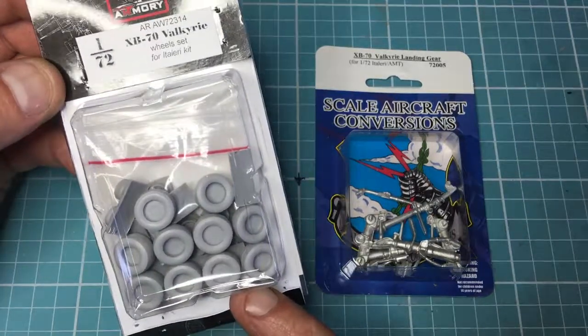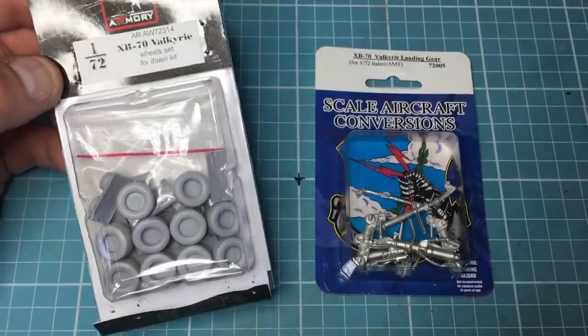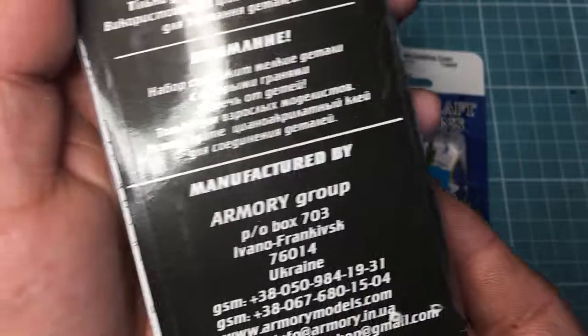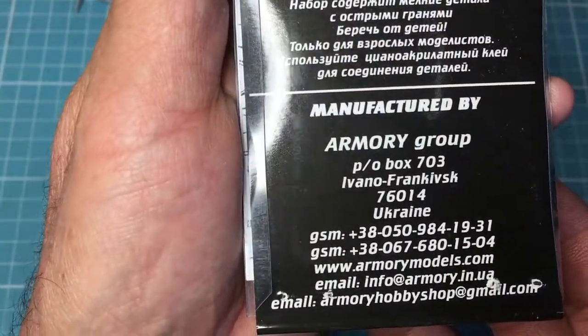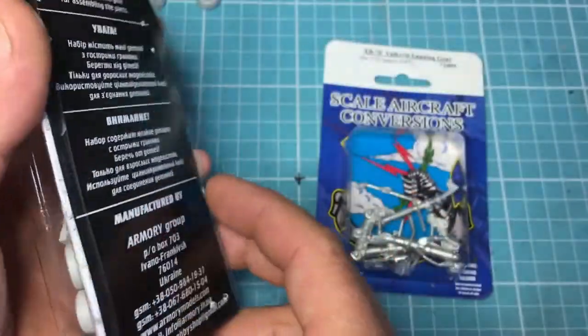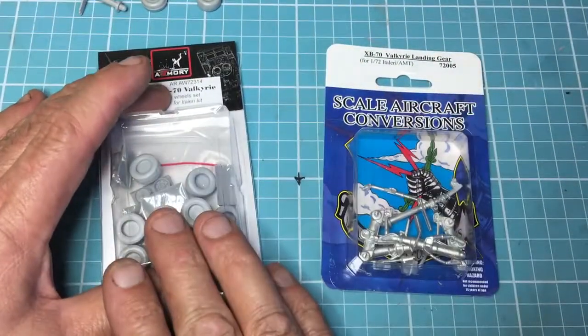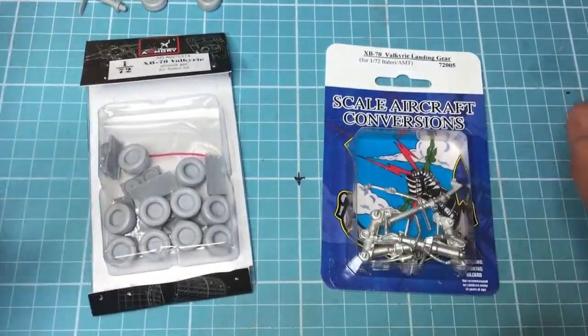These are the wheels and tires for the Valkyrie. They're available from Hannants, as are these. This is the company here if you're interested in getting hold of them. I'm not sponsored - I've bought these myself from Hannants.